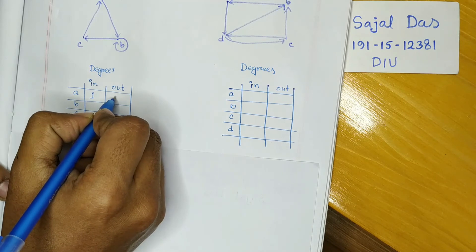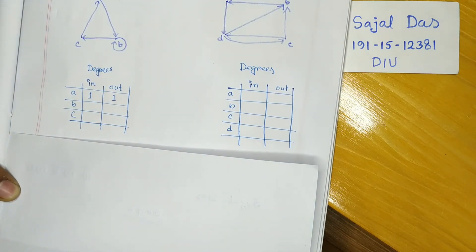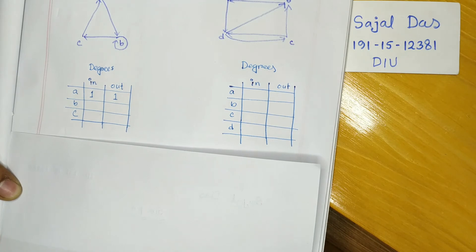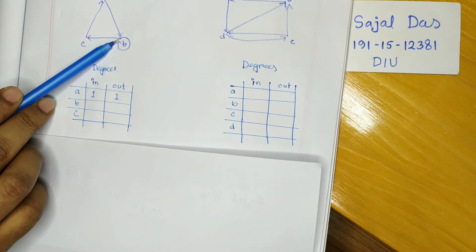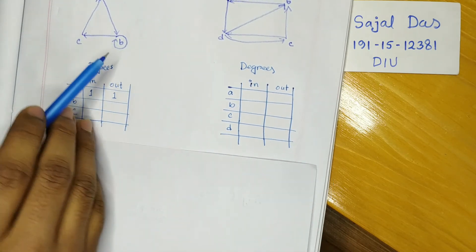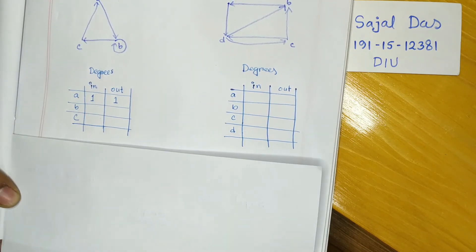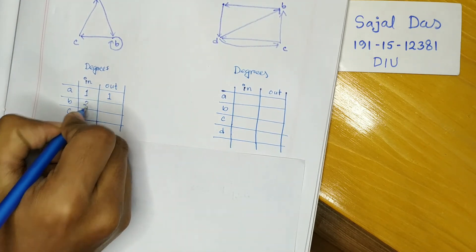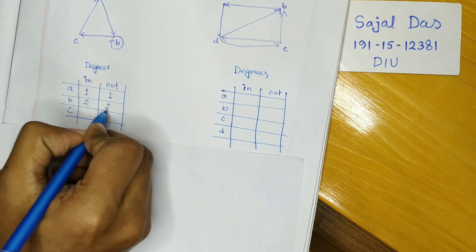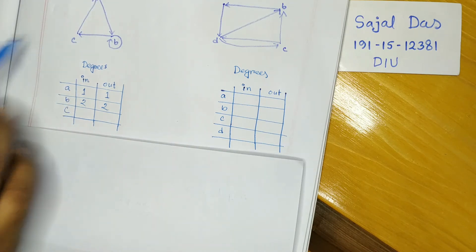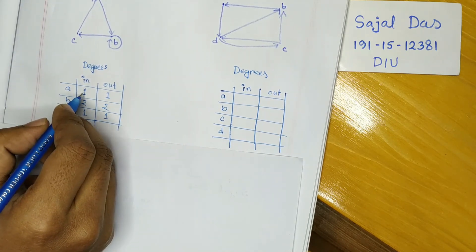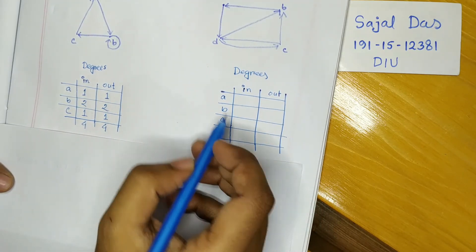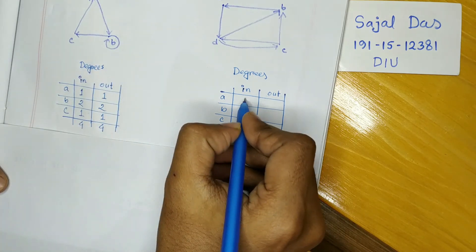For vertex a, there is one incoming edge and one outgoing edge, so in-degree is 1 and out-degree is 1. For vertex b, there is one outward and one inward edge, plus a loop — the loop counts as both incoming and outgoing — so in-degree is 2 and out-degree is 2. For vertex c, there is one outgoing and one incoming, so in-degree is 1 and out-degree is 1. The total in-degree is 4 and total out-degree is 4.